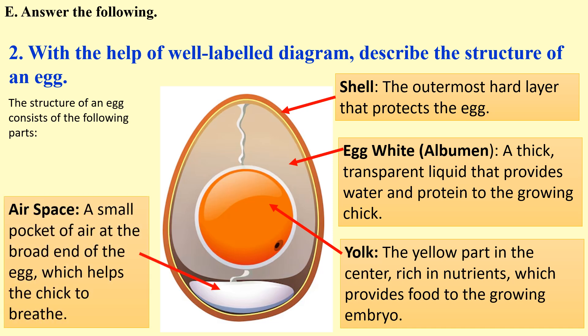Embryo: A developing baby. Air space: A small pocket of air at the broad end of the egg, which helps the chick to breathe.